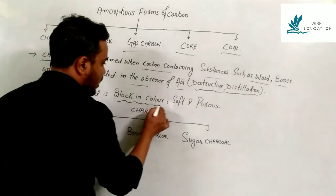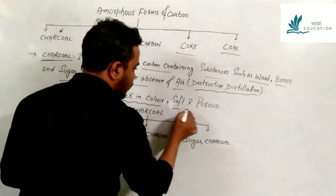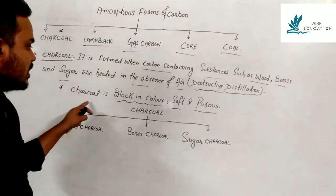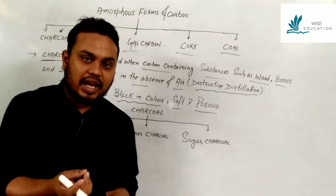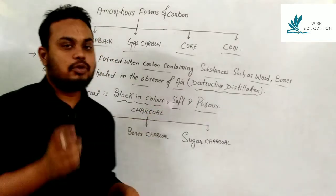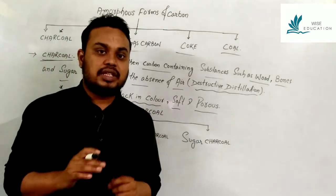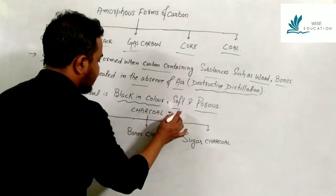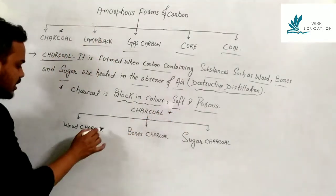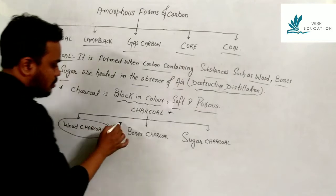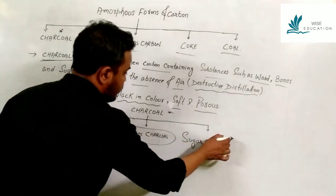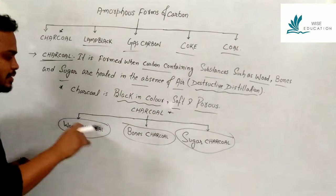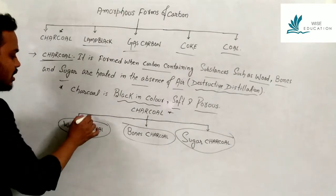Charcoal is black in color, soft and porous (spongy) in character. There are three types of charcoal: wood charcoal, bone charcoal, and sugar charcoal.